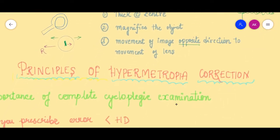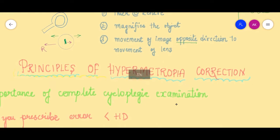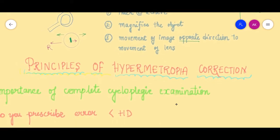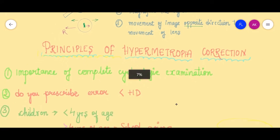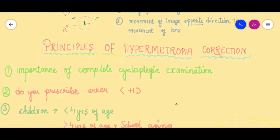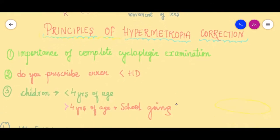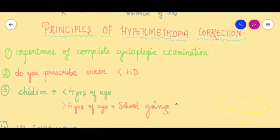Whenever we are treating hypermetropia with convex lenses, there are certain principles — about six principles — that I want you to know. The first principle of treatment of hypermetropia is the importance of a complete cycloplegic examination.